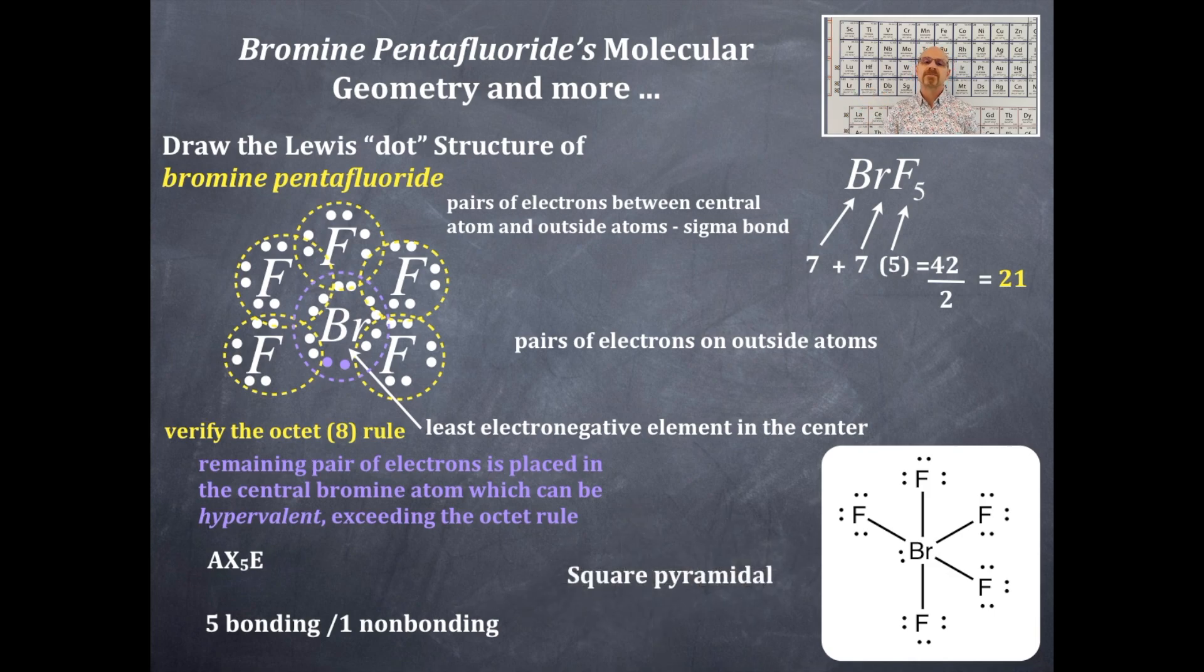What are the bond angles for square pyramidal? You've got a lone pair on the central region that compresses the other bond angles. They would be expected to be 90, but they're not. They're something less than 90.